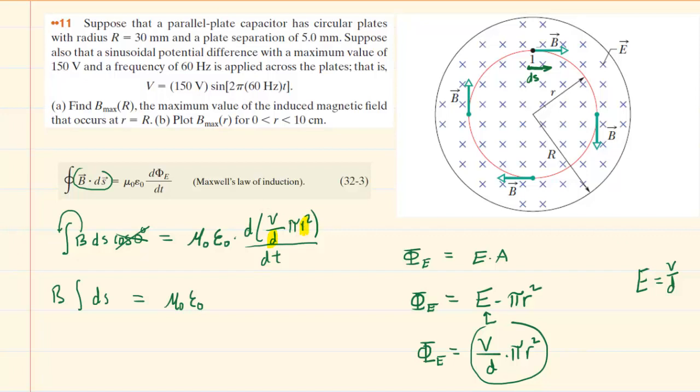So, when we differentiate this quantity, we can actually take the constants to the outside of the derivative. So, we're basically left with pi r squared over d, and then that's going to be multiplied by dv dt, the rate of change in the electric potential. Now, a little bit further work is needed here. We have the integral of ds.